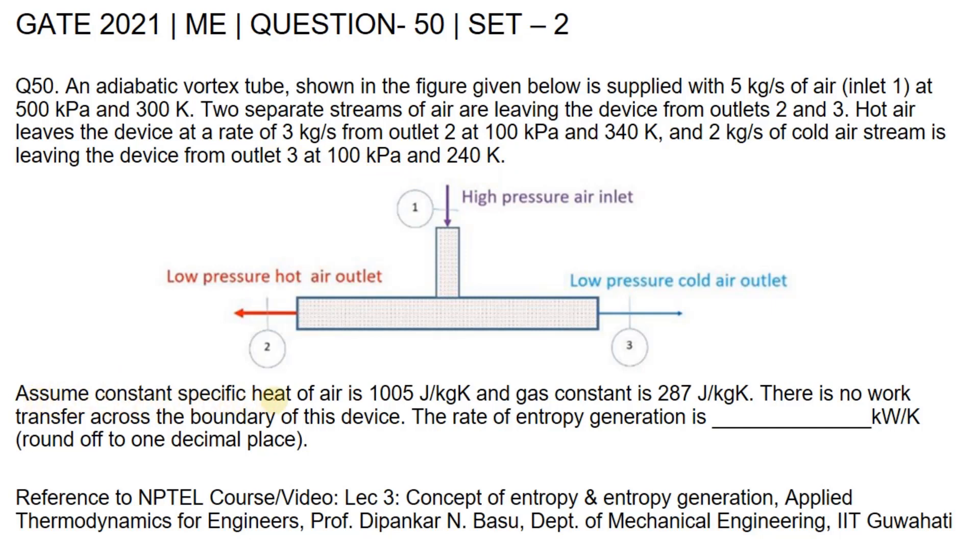Assume constant specific heat of air is 1005 joule per kilogram Kelvin and gas constant is 287 joule per kilogram Kelvin. There is no work transfer across the boundary of this device. The rate of entropy generation is what we need to calculate.